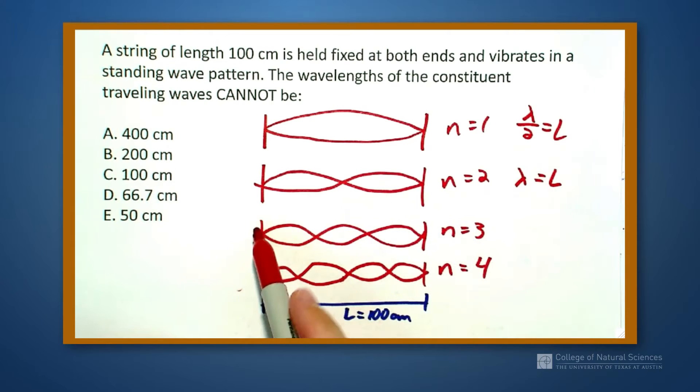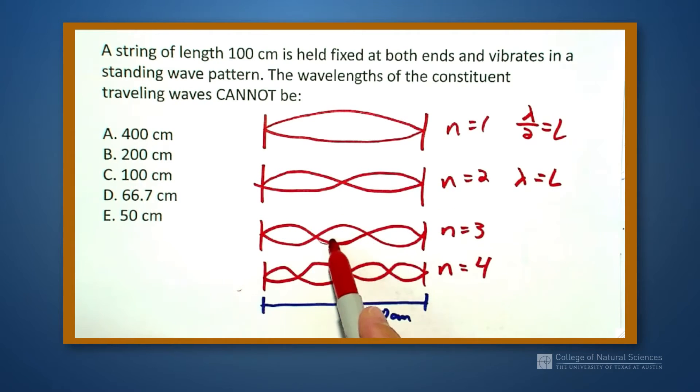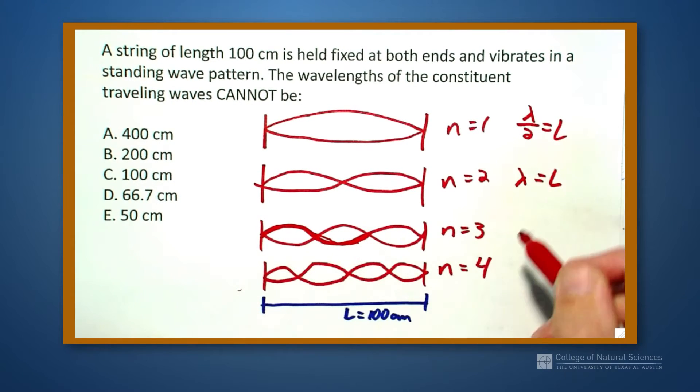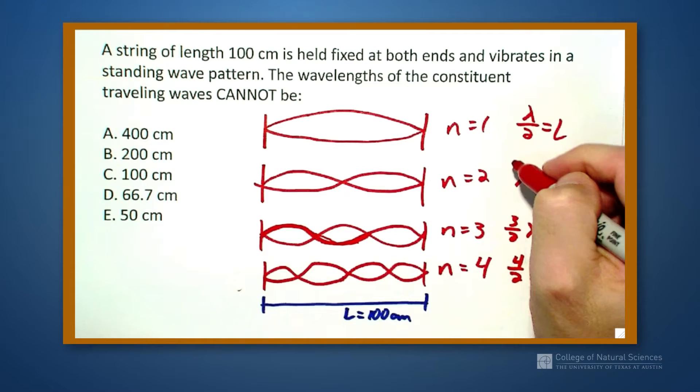This one right here, I have one full wavelength up, down, right here. So I have three halves lambda equals L. And this one I have four halves lambda equals L. And actually this is two halves. I have one half, two halves.